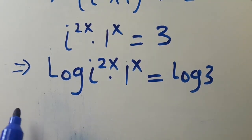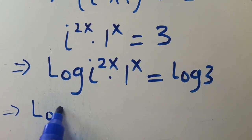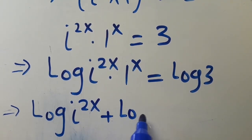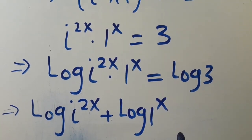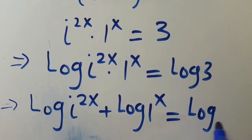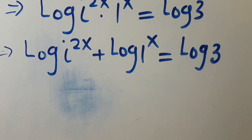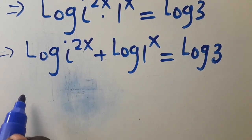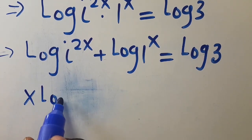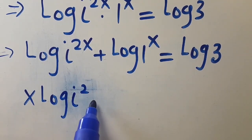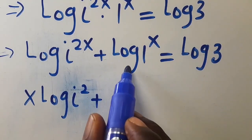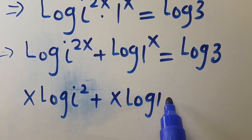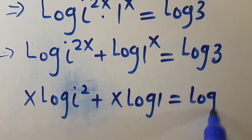This multiplication will change to addition, so we are going to have log of i to the power of 2x plus log of one to the power of x equals log three. So from here, this power comes down to the base, so we can have it to be x times log i to the power of 2, plus x log one equals log three.